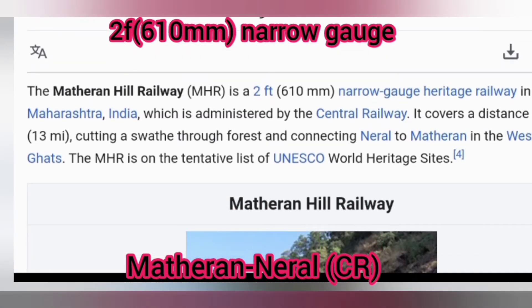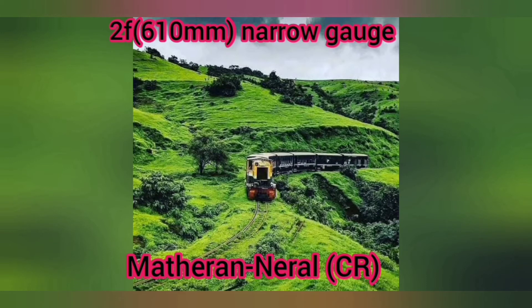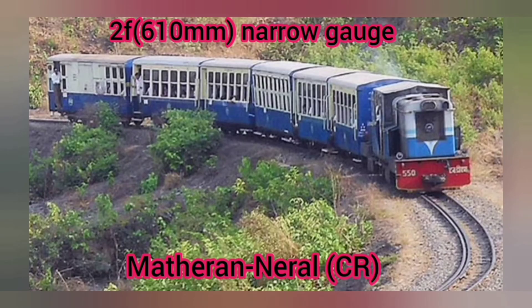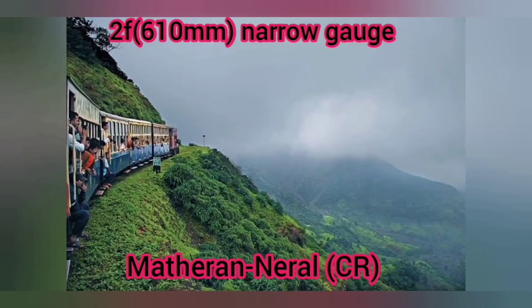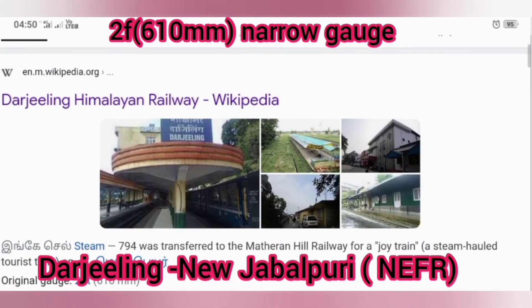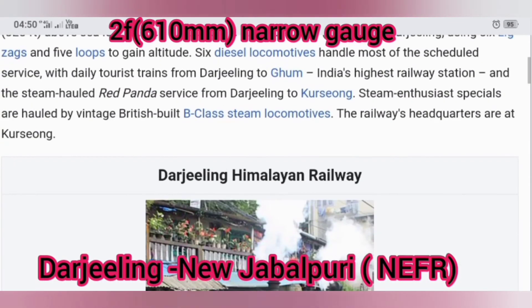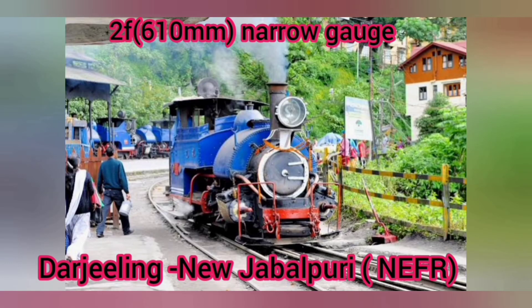Next we can see where these gauges are used in Indian railway. Firstly, 610 mm narrow gauge is used in two places in India: that is Matheran to Neral in Central Railways, about 21 km, and Darjeeling Himalayan Railway runs between Darjeeling to New Jalpaiguri, about 88 km.